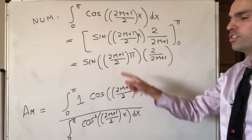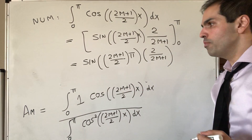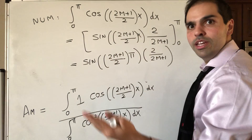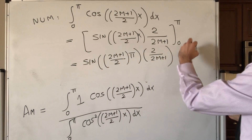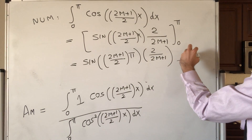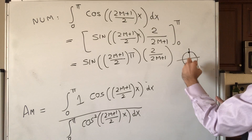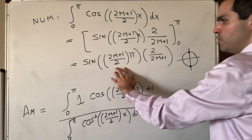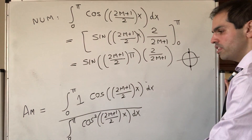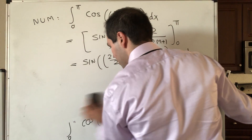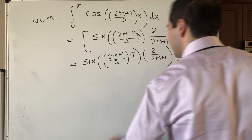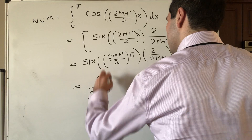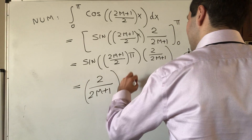Now, what is this? It's just sine of odd multiples of π/2 — think sine of π/2, sine of 3π/2, etc. If we're on top, sine is 1; if we're on the bottom, sine is −1. So it turns out this becomes (−1)^m. In the end, we get 2/(2m+1) times (−1)^m.